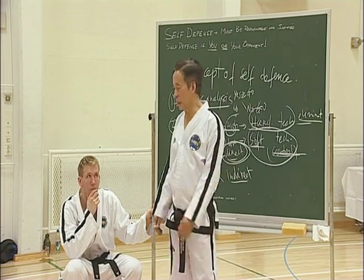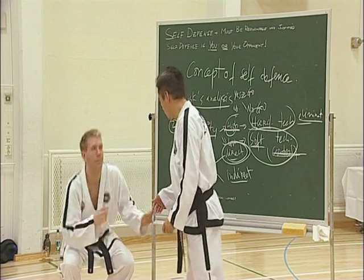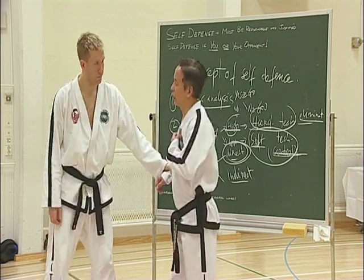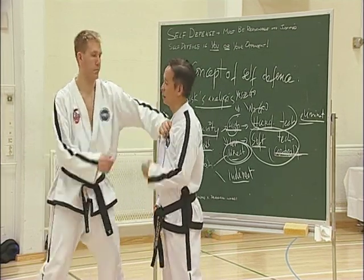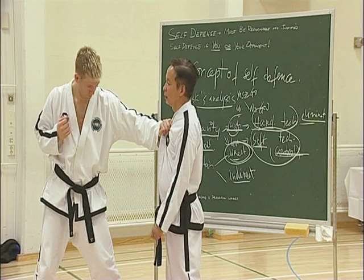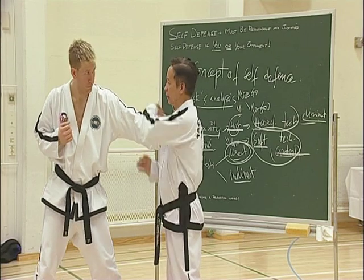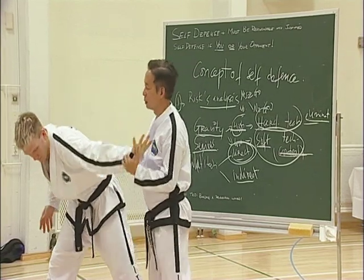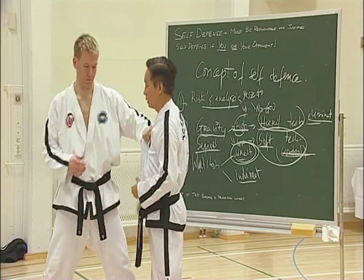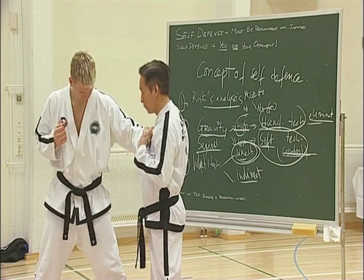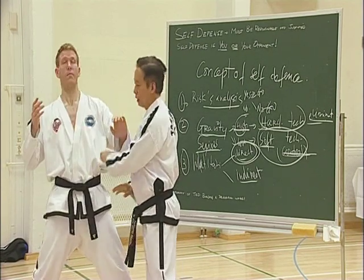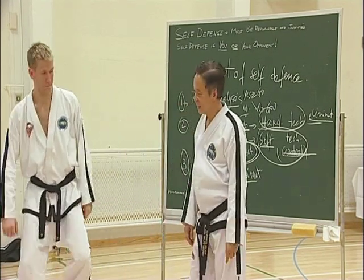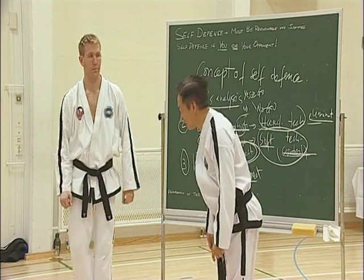You use direct technique. What does that mean? Direct technique — for example, if you grab me here, I will grab you here. Indirect technique is I need to control something like that. But for me I prefer — boom, like that — and that's finished. Go.